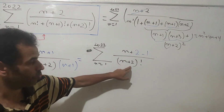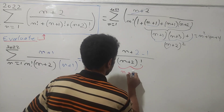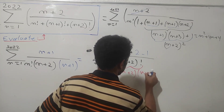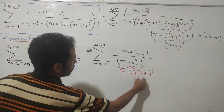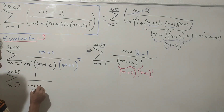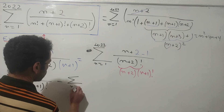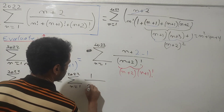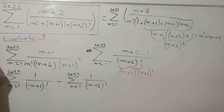Splitting the fraction: since (n+2) over (n+2) factorial cancels to give 1 over (n+1) factorial, I end up with two sums. The first sum is Σ 1 over (n+1) factorial, and the second sum is minus Σ 1 over (n+2) factorial, both from n equals 1 to 2022. These are two nice telescoping sums.